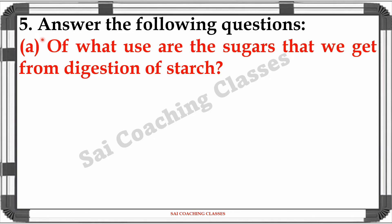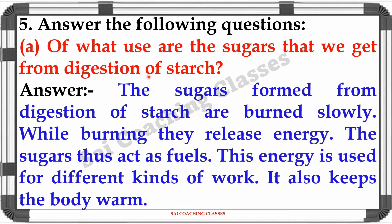Number 5. Answer the following questions. A. Of what use are the sugars that we get from digestion of starch? Answer: The sugars formed from digestion of starch burn slowly, and while burning they release energy. The sugars thus act as fuels. This energy is used for different kinds of work. It also keeps the body warm.